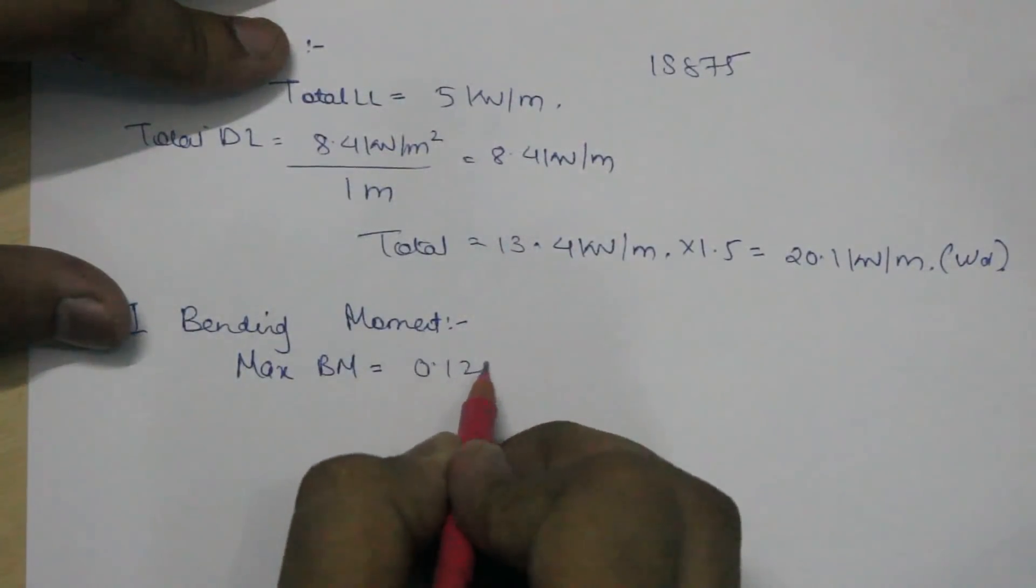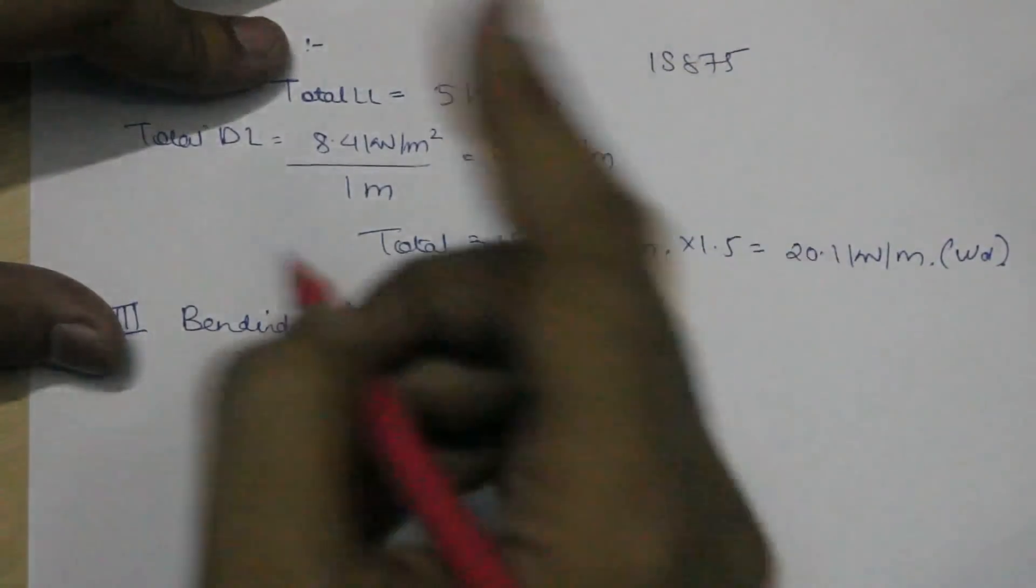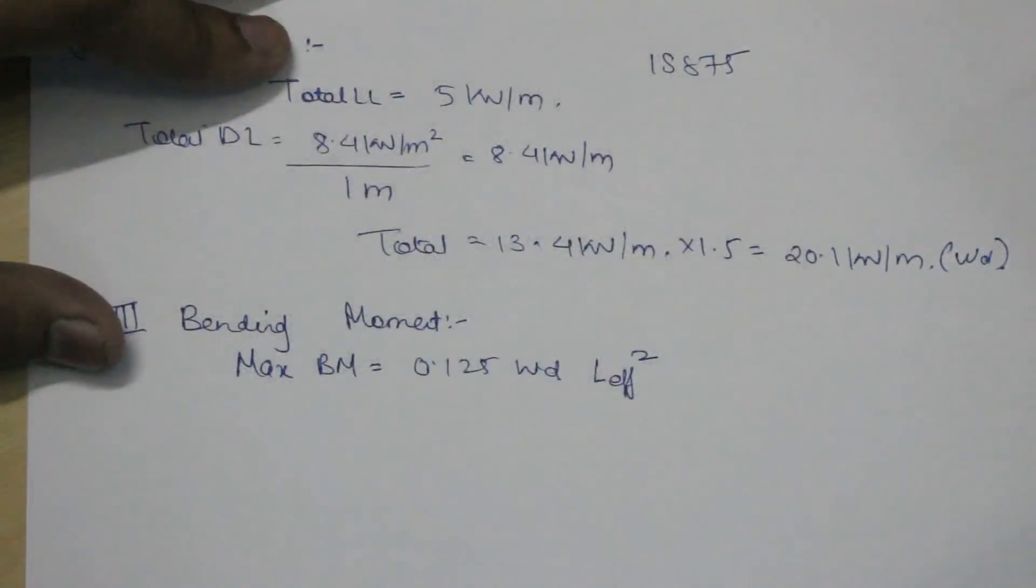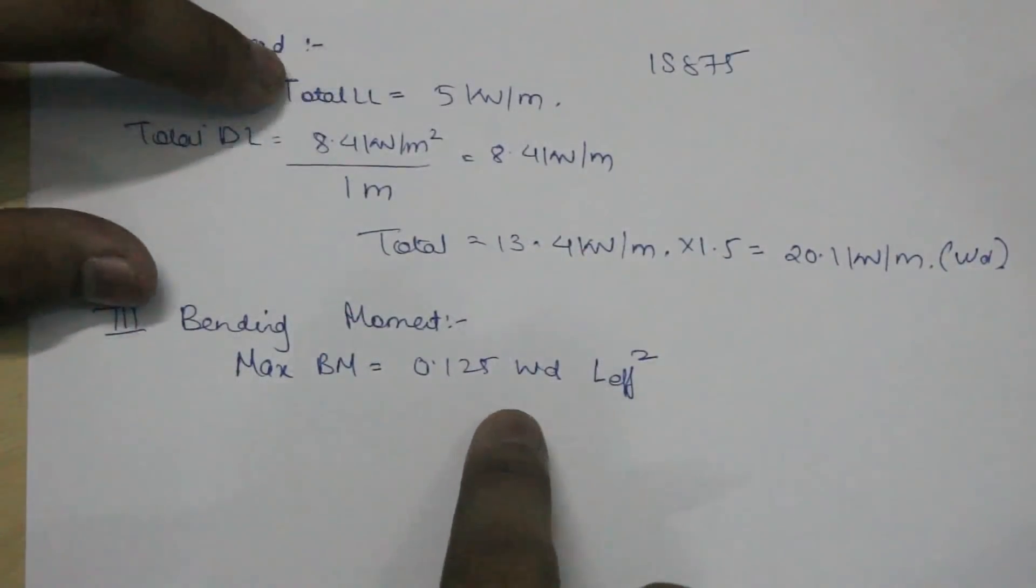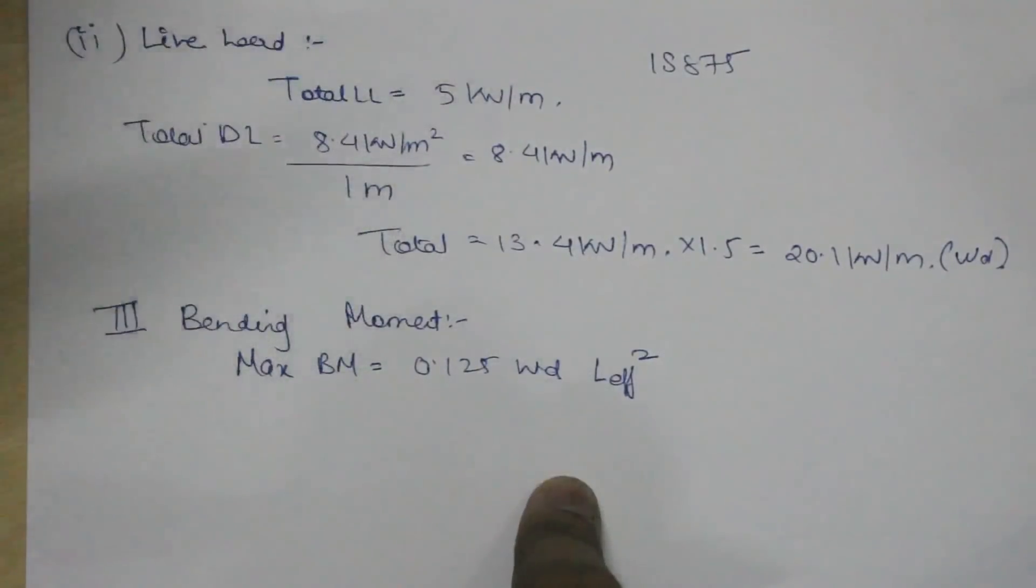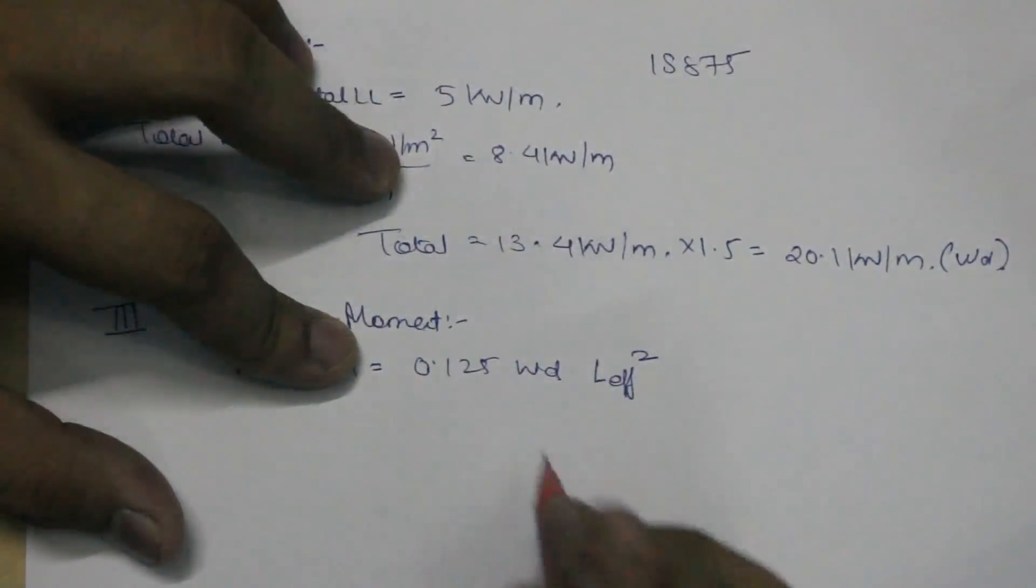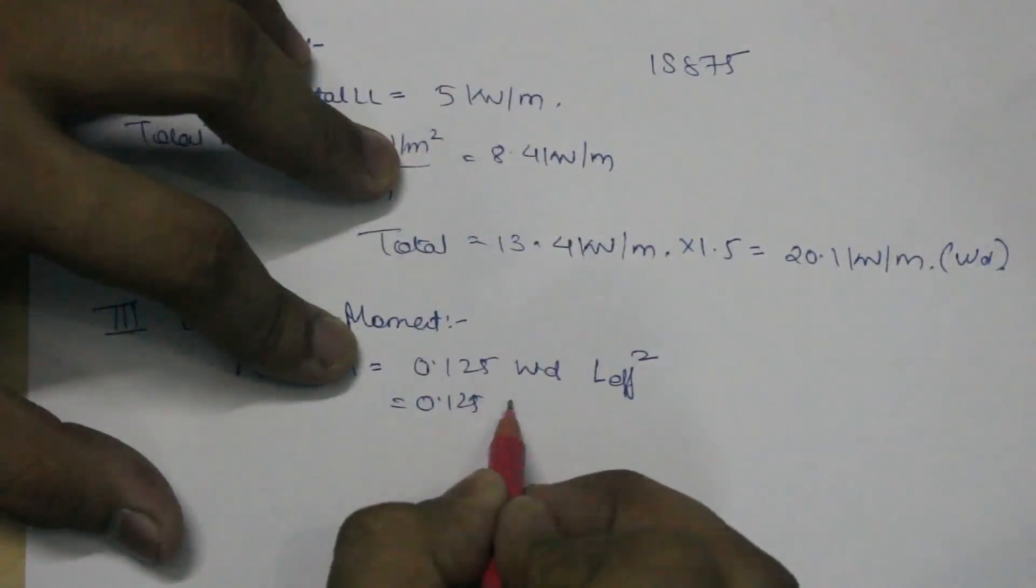For maximum bending moment, the formula is 0.125 wd multiplied by L effective squared. This formula is specially for staircases. This has been derived by drawing the bending moment diagram and the shear force diagrams. The maximum bending moment acts at the center of the staircase which is given as 0.125 wd L effective square. So 0.125 multiplied by 20.1 multiplied by 4 square, so that is 40.2 kilonewton meter.